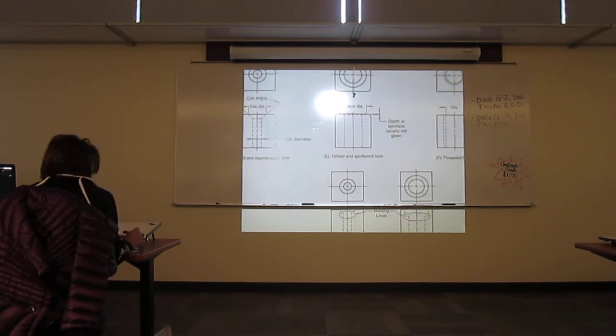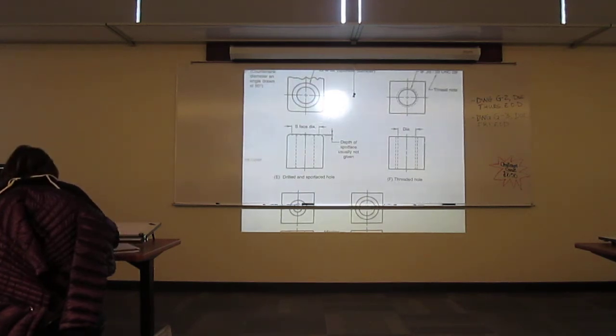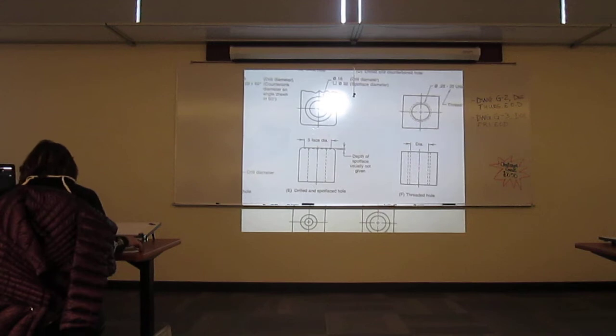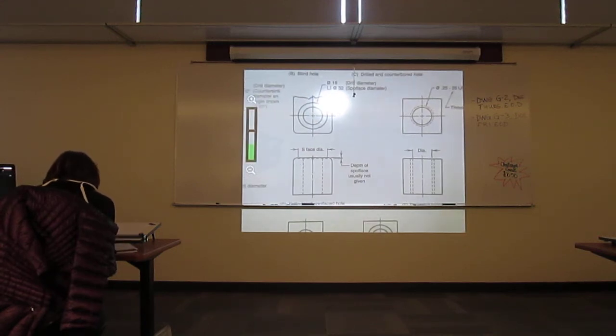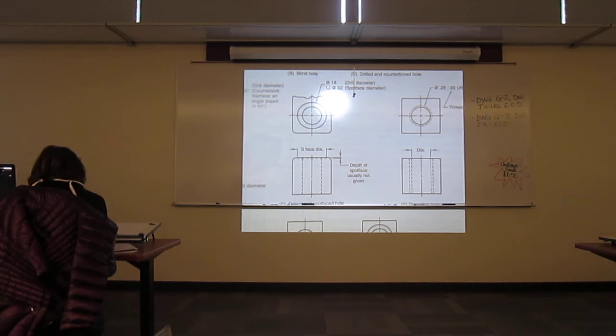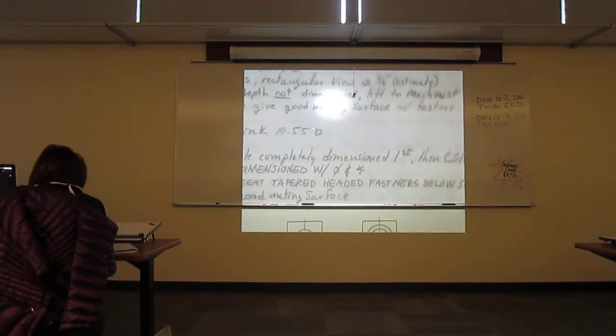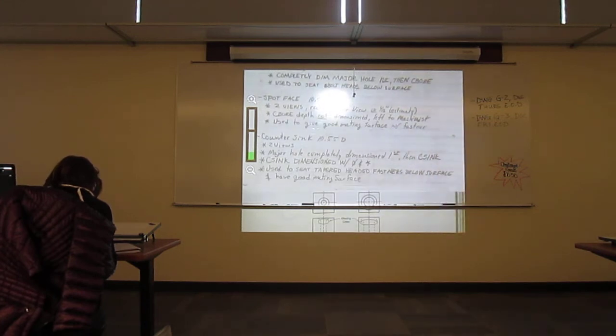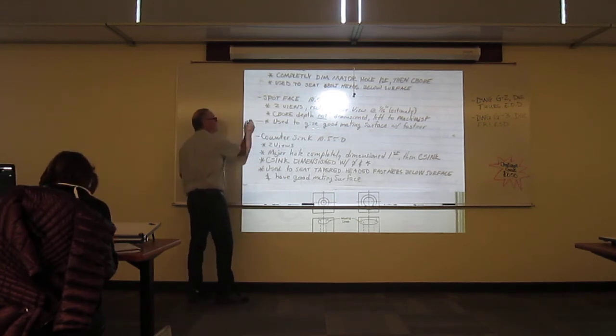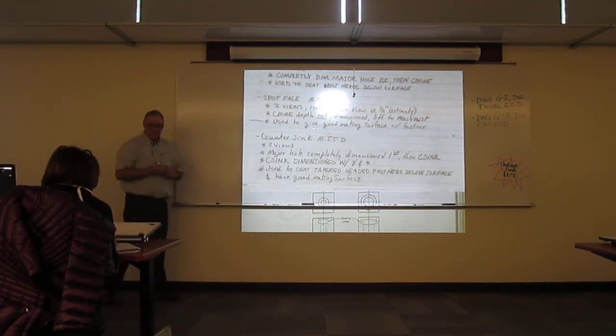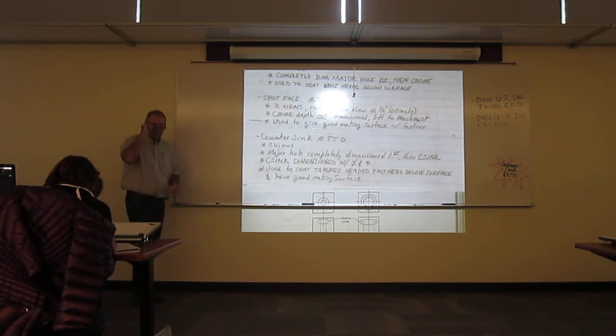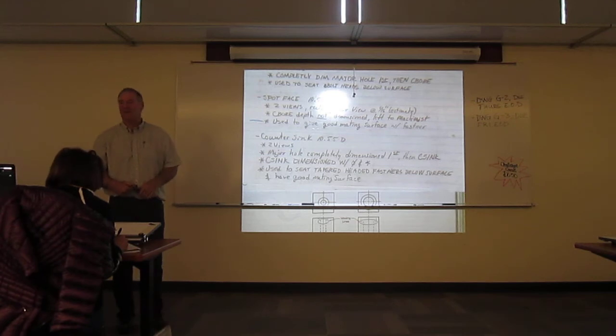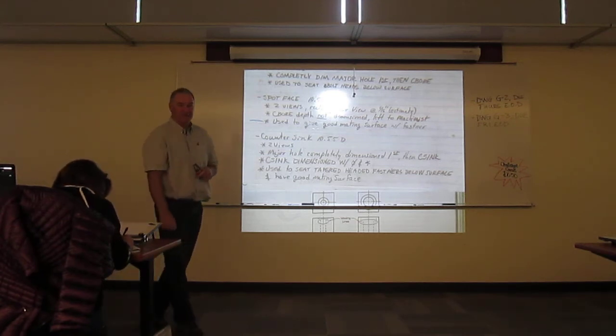I'm going to skip the next one and go to E, which is a spot face. Here's the definition of a spot face. It's this one right here. Used to give a good mating surface with a fastener. We call this a spot face.